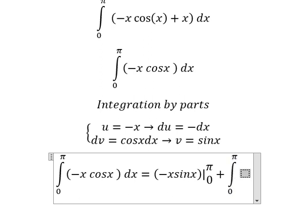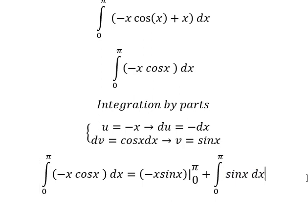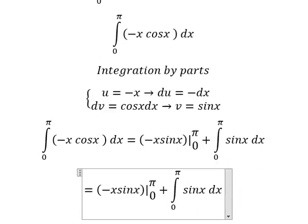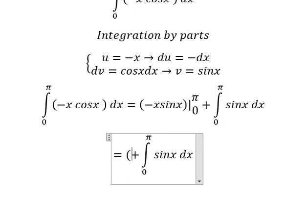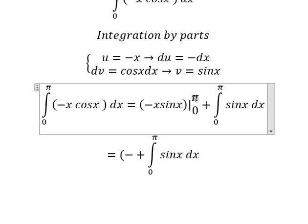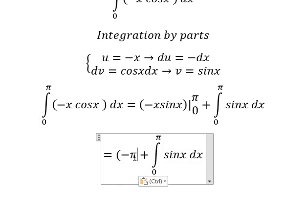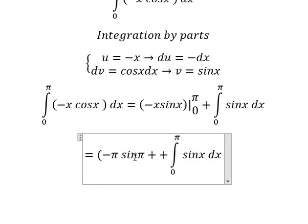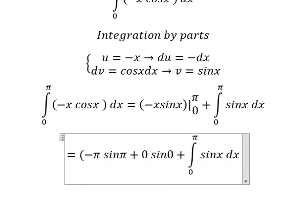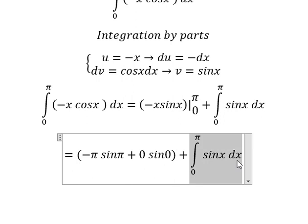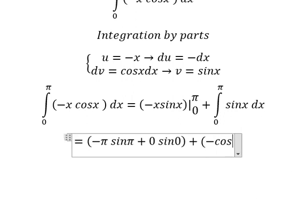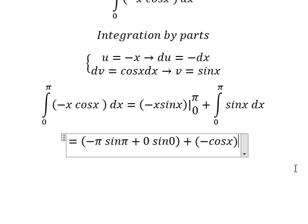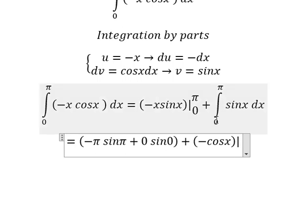And then we have sin x dx. So I will put π here, zero here. This one is about negative cosine x, and I will put the bounds from zero to π.